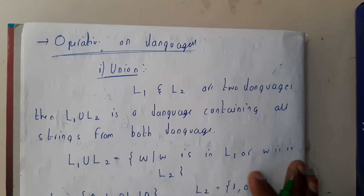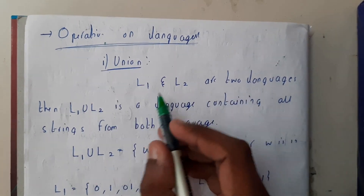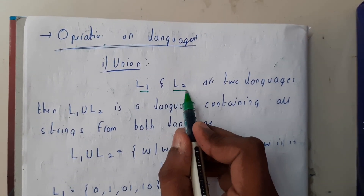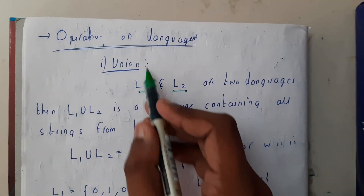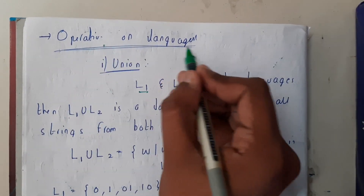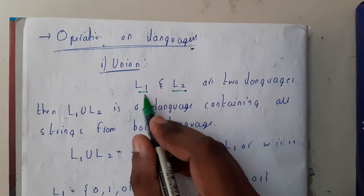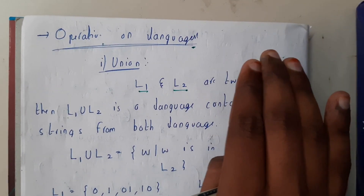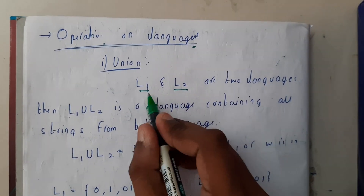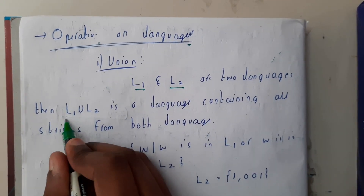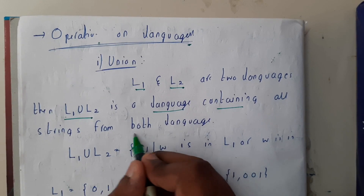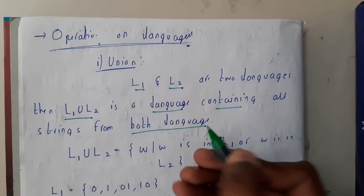First is union. Let us assume that L1 is our first language and L2 is our second language. Remember, whenever you find words like union or concatenation, just create two or more things and union them, and write a small example — it will be more than enough. So L1 and L2 are the two languages.